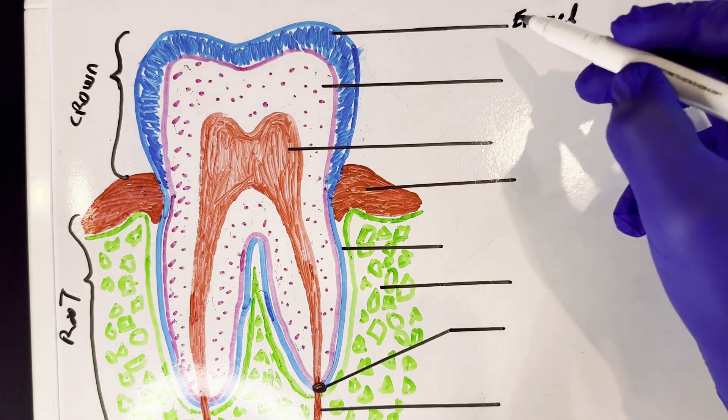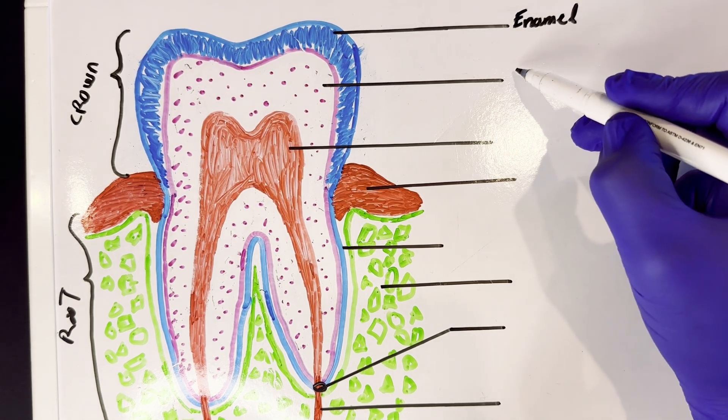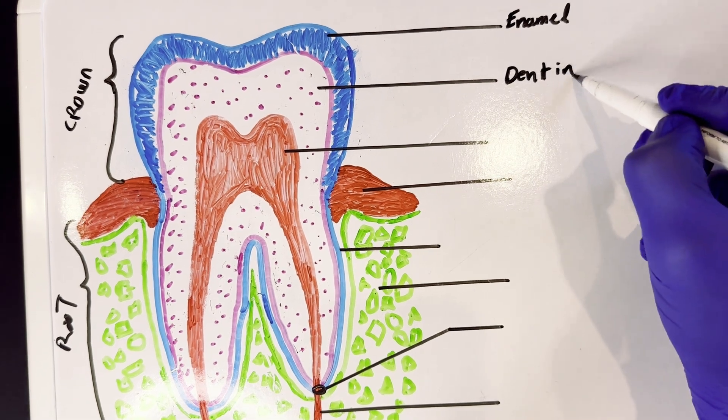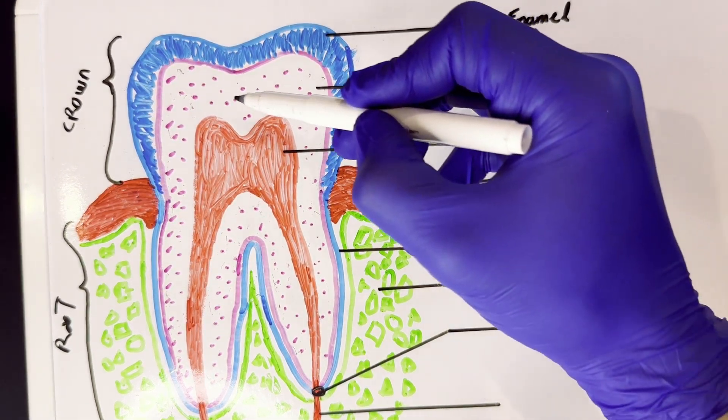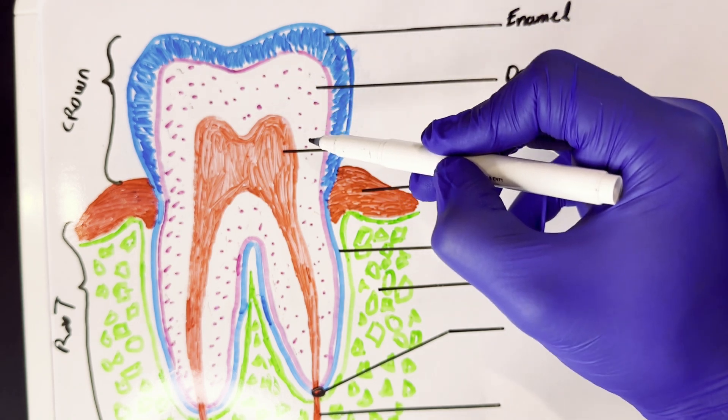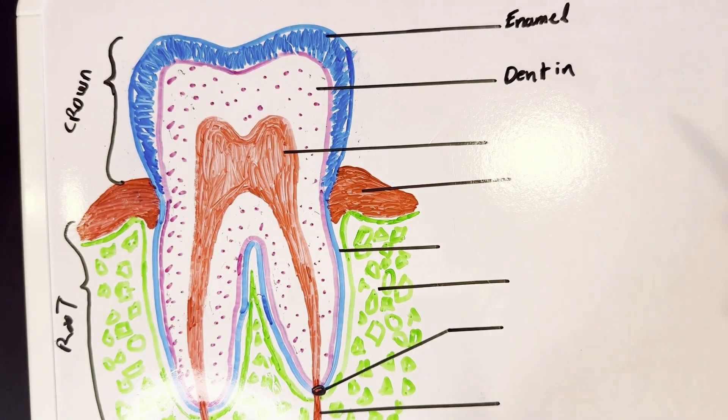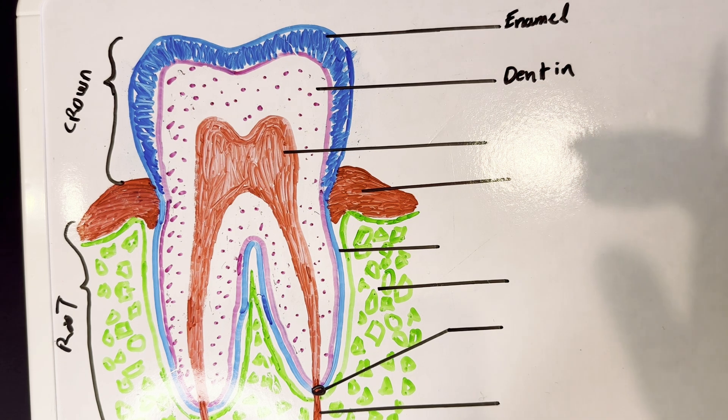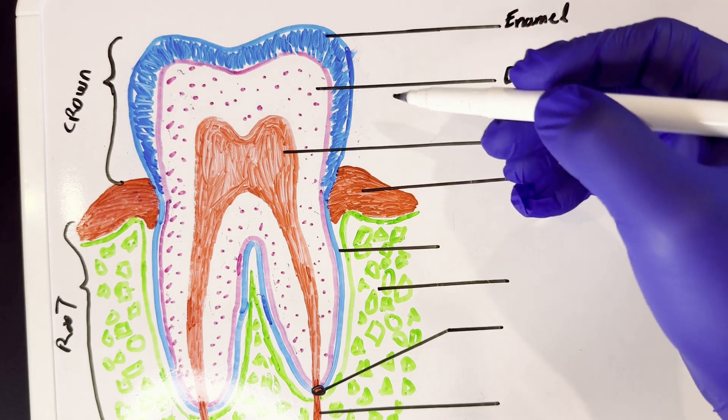The next after that is the dentin. All this would be the bulk of the tooth that is made up by the dentin. Now dentin is also another hard structure but not as hard as enamel. If enamel chips off or flakes off for some reason or if a cavity begins, the dentin is not very resistant.